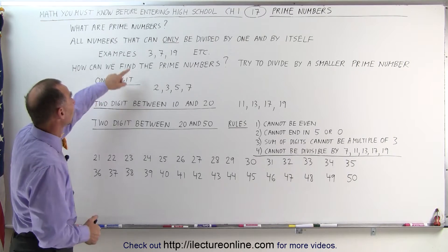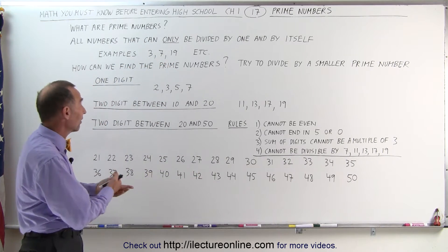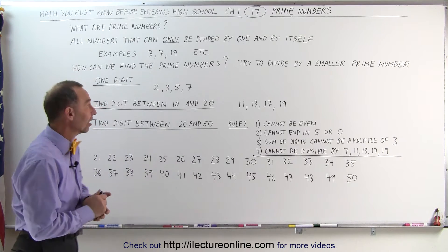Some examples of that are the numbers 3, 7 and 19. You can go ahead and try it. 3, 7, 19 can only be divided by 1 and by itself.